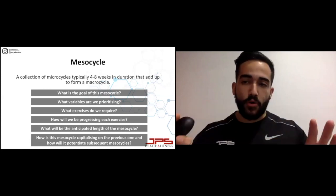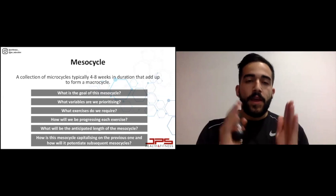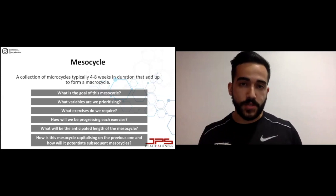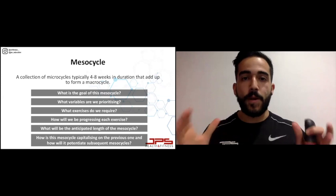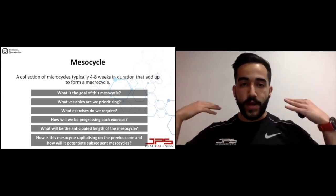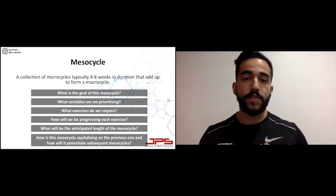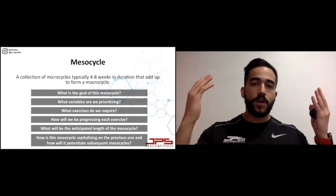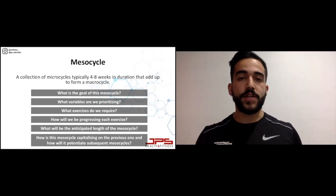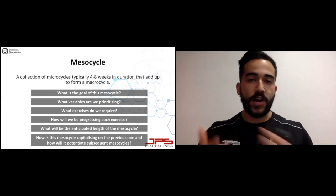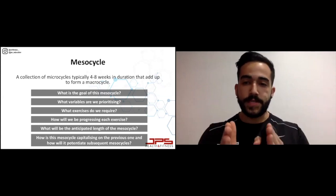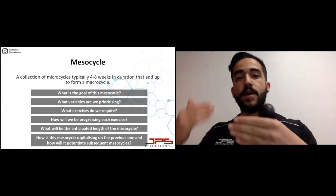One of the most important considerations when creating a mesocycle is: how is this current mesocycle capitalizing on the previous one, and how is it going to potentiate subsequent mesocycles? You can't think of mesocycles as individual units — there needs to be coherence throughout the macrocycle plan. What you're doing now needs to take advantage of what you did previously and potentiate what you'll be doing in the future. You can't be training for hypertrophy one week, strength the next, and then something else the week after. Coherence is essential, and historical data must be accounted for.